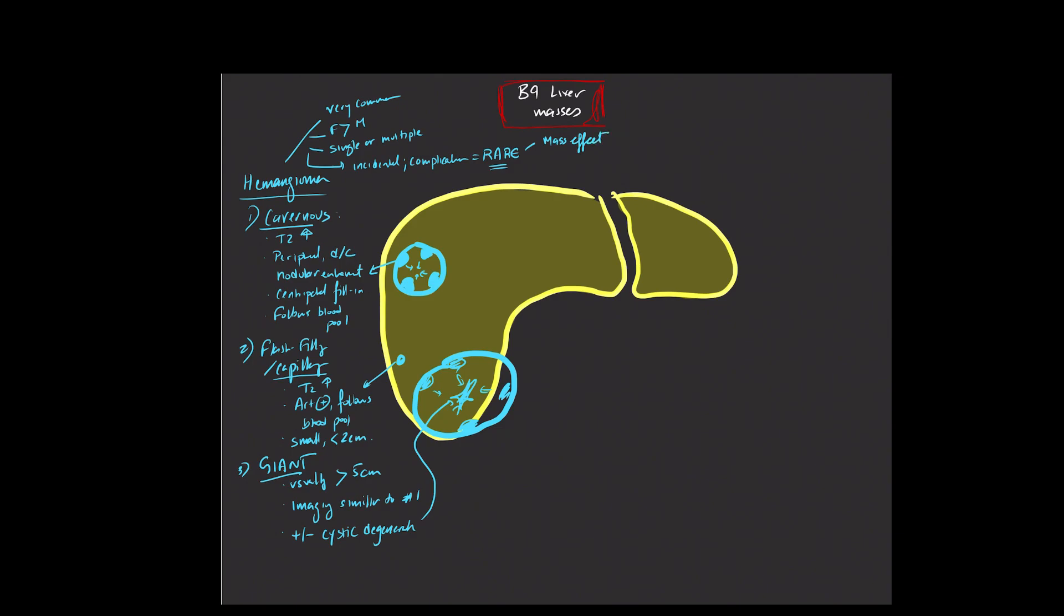There's this entity of Kasabach-Merritt syndrome, when you have a large hemangioma, particularly in pediatric patients, that consumes platelets and can cause a coagulopathy. Really rare, and then even rarer is bleeding causing hemoperitoneum. So really uncommon complications for the most part. Really don't need to be worried about hemangiomas when you encounter these lesions.